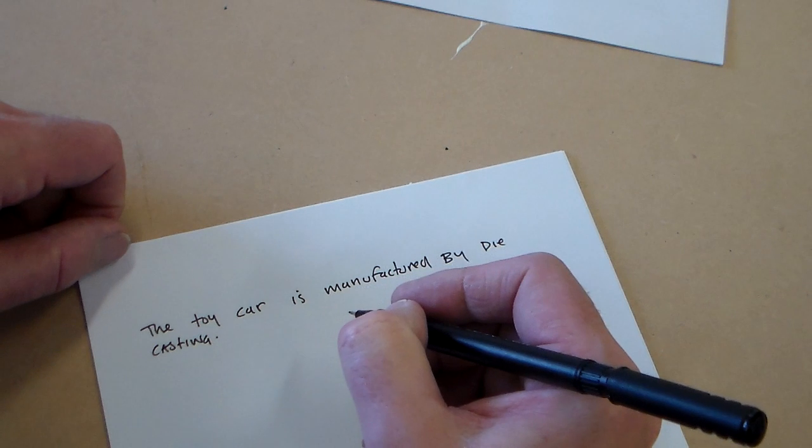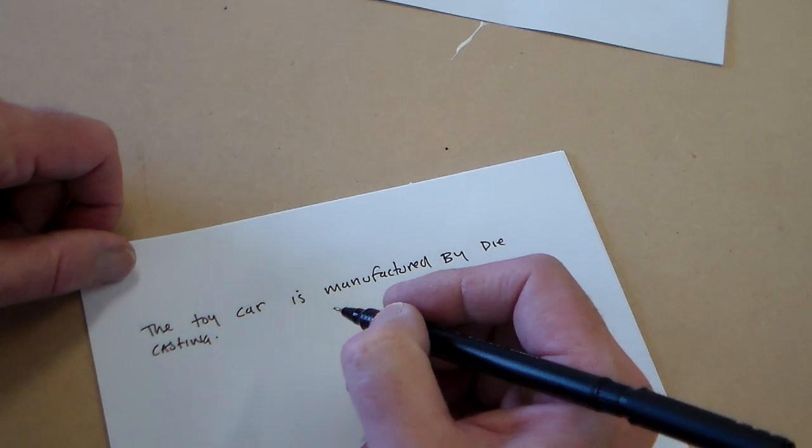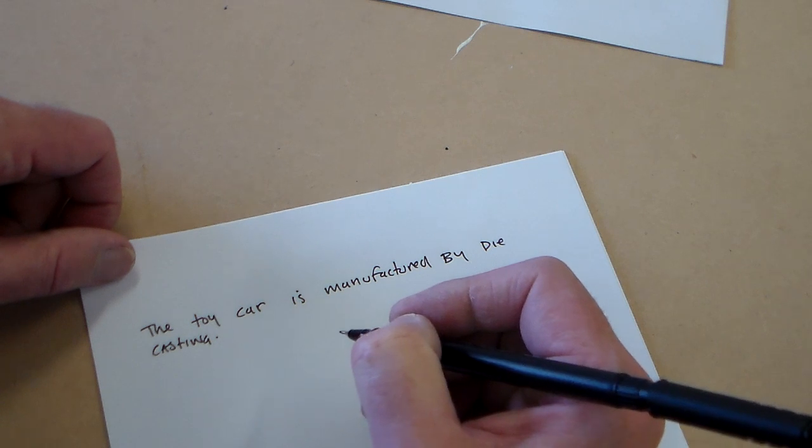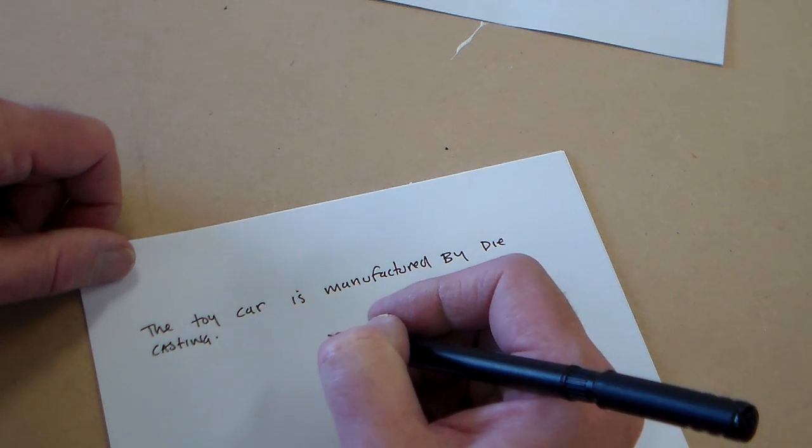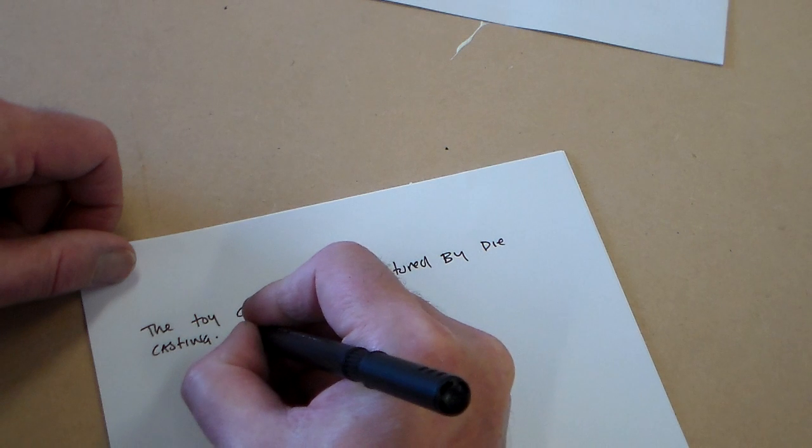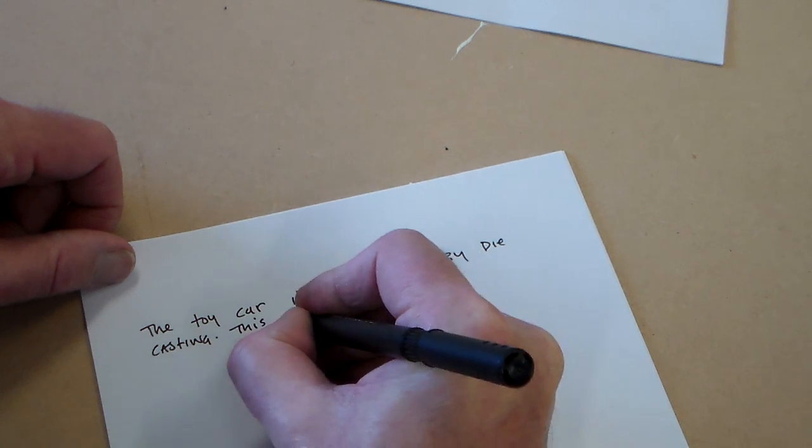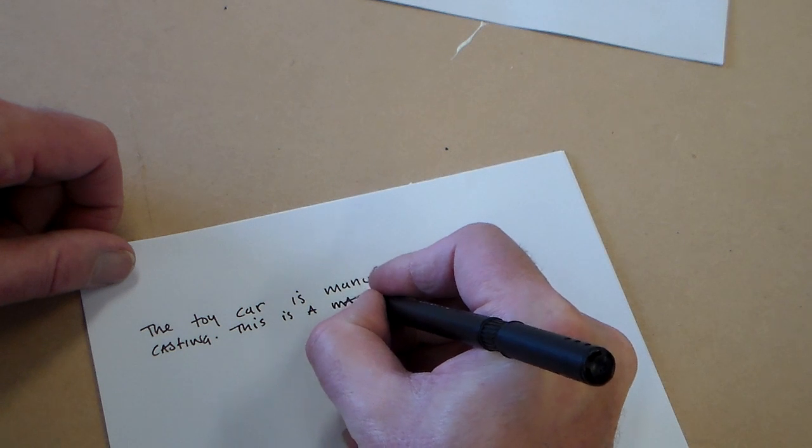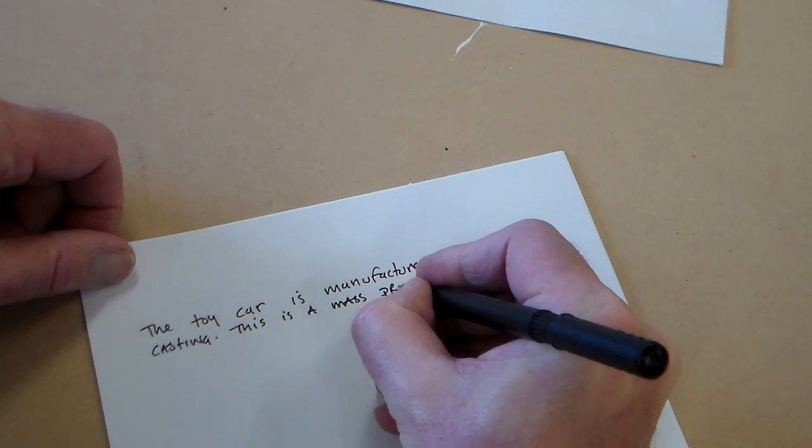Now, to get the full marks we need to correctly name the process. We also need to talk about the main elements of the process. So, we can say that this is a mass production process.